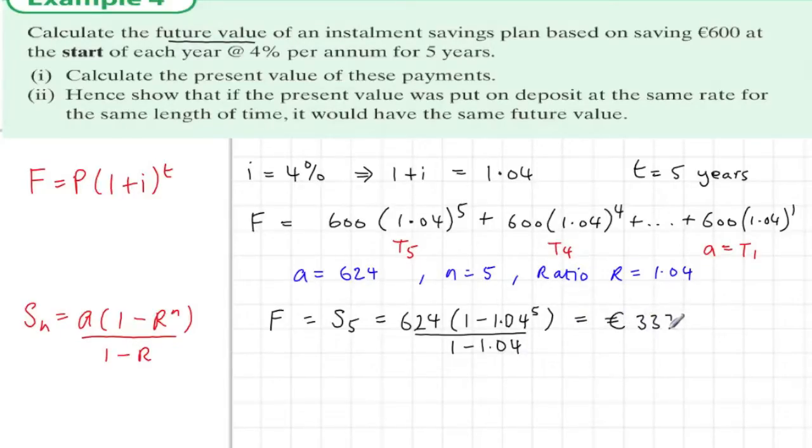In part 2, we're asked to work out the present value of these 5 payments of 600 euros. And we'll write down the present value formula just to have it here.